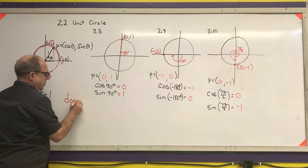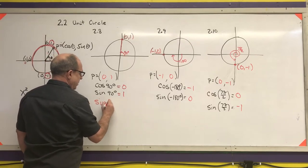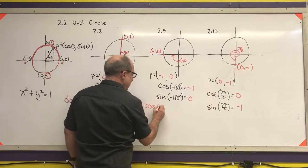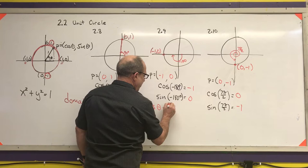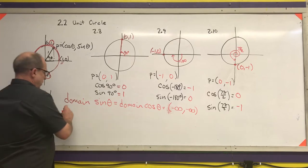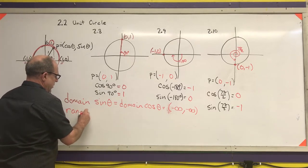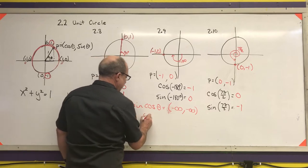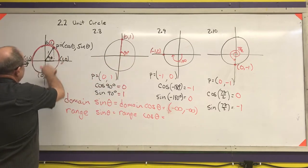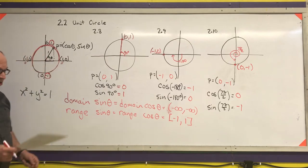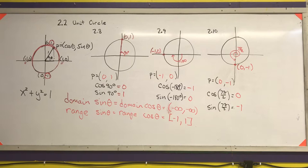The domain of sine of theta equals the domain of cosine of theta, which is all real numbers — I can put any number into the sine and cosine functions. The range of the sine function equals the range of the cosine function, which is -1 to 1, inclusive. That's a key point: sine and cosine cannot get bigger or smaller than -1 or 1.